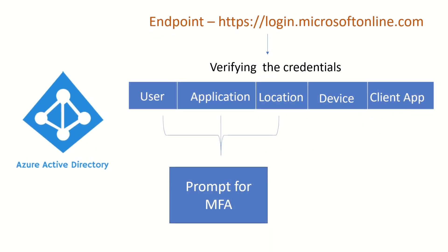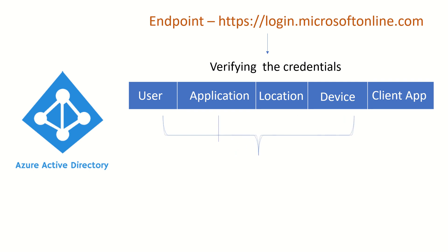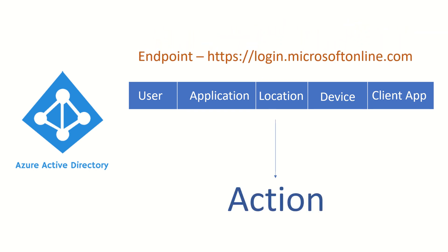All these parameters can be used to customize or define a particular condition. For example, if a user is trying to access an application from a specific location, you should prompt for MFA — that could be one conditional access policy. Another policy could be: if a user is trying to access an application from a specific location or using a browser instead of a rich client application, then access should be blocked. You have to be very focused on all these parameters when defining your conditional access policy, because depending on the policy defined, a specific action will be taken: allow, block, or allow with MFA. There can be any number of combinations.